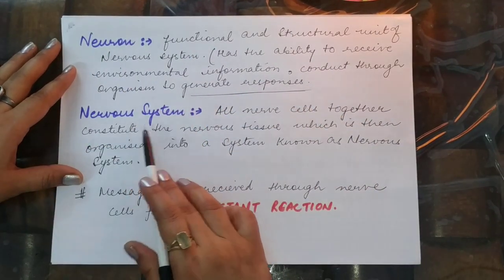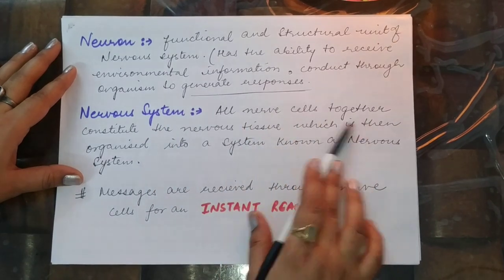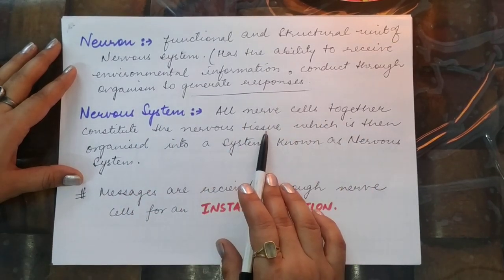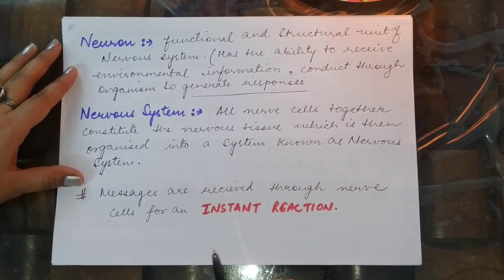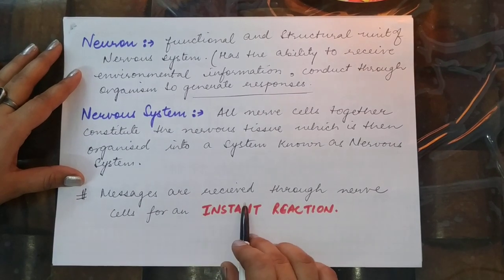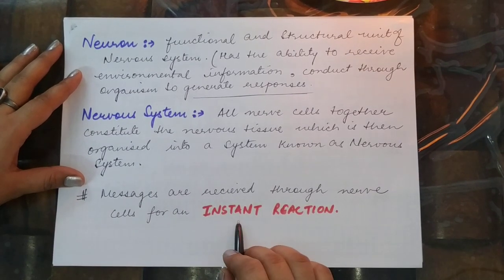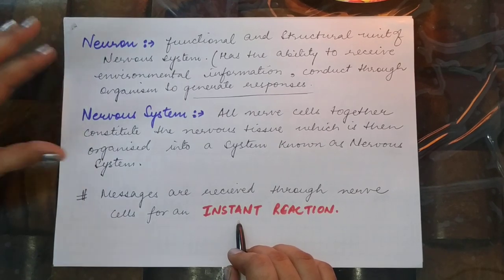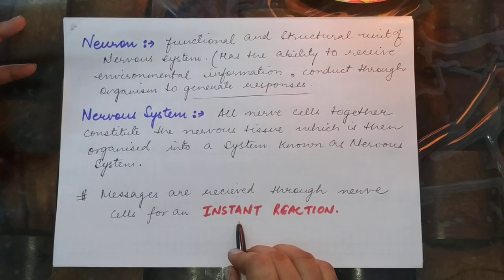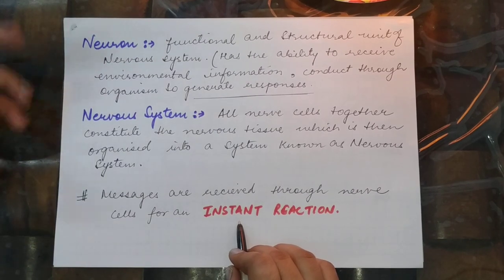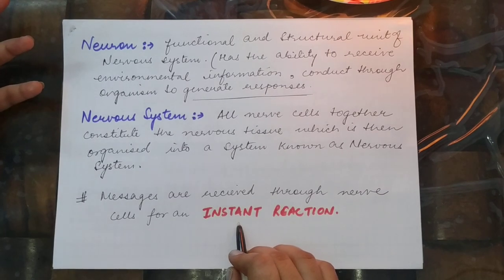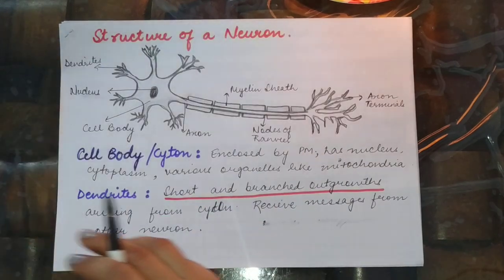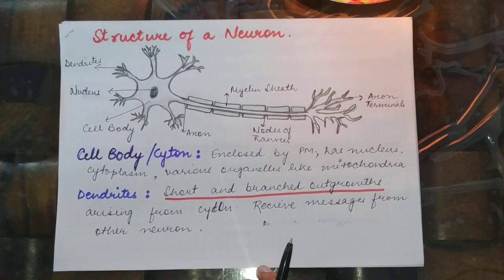All nerve cells together constitute the nervous tissue, which is then organized into a system called the nervous system. Messages received through nerve cells have an instant reaction. For example, if you touch a hot object, you remove your hand within milliseconds because it is a very quick response. If the response were slow, the chances of the body getting hurt would be greater.